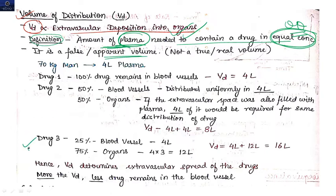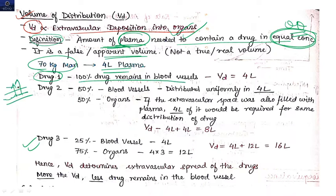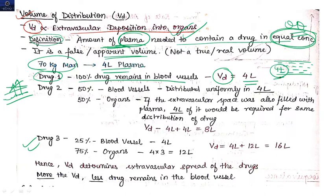Let me give an example. Consider a 70 kg man with 4 liters of plasma. For Drug 1: 100% of the drug remains in blood vessels and does not cross the endothelium. The volume of distribution of this drug is 4 liters, because the whole drug is present inside the plasma only.